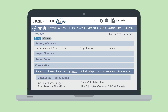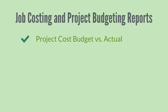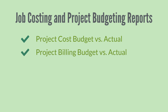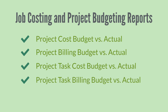The overall project budget will reflect the budgets that are set on related project tasks. When you enable the job costing and project budgeting feature, you will have access to several key reports. These reports include Project Cost Budget vs. Actual, Project Billing Budget vs. Actual, Project Task Cost Budget vs. Actual, Project Task Billing Budget vs. Actual, and Project Profitability. With these reports, you will be able to see comparisons of how the various budgets for your projects worked out in reality, enabling you to make more accurate budgets in the future.